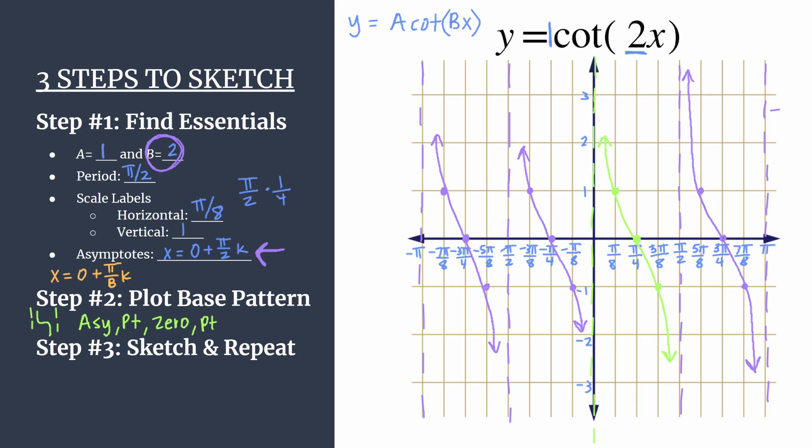Hope this helped you understand how to sketch y equals cotangent of 2x. So take this method and apply it to graphing other unshifted cotangent graphs. Take some practice, but once you've got the method, then you'll be really confident graphing these. I will also post more worked examples really soon. So check out those links in the video description and thanks for watching.